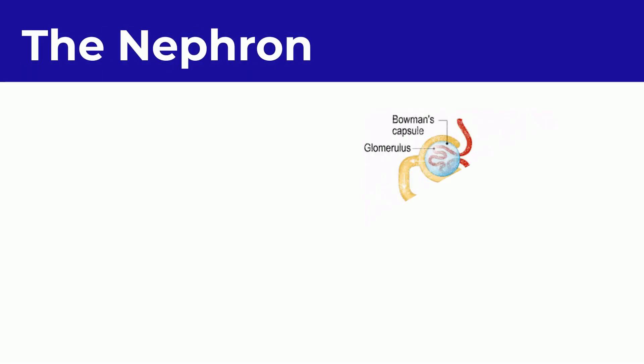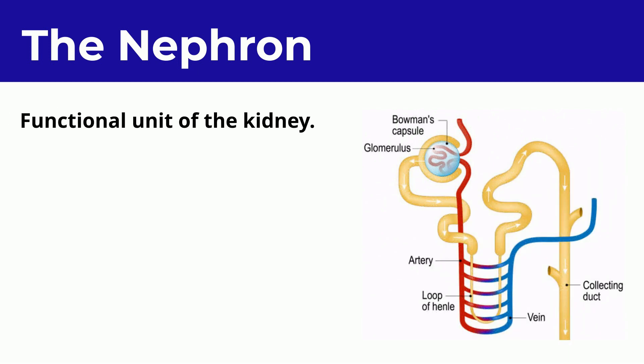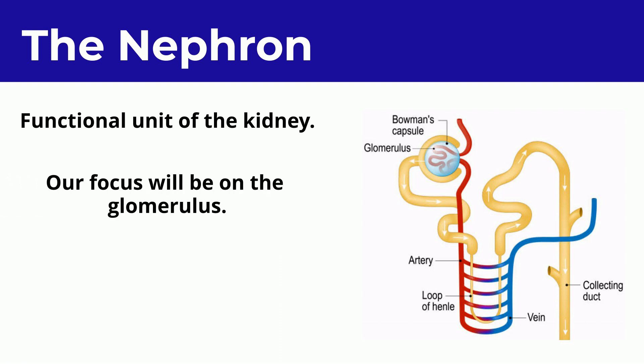The kidney contains millions of these tiny structures. What are these structures? This is the nephron, and the nephron is a functional unit of the kidney, where the kidney performs its function of blood filtration. The focus of this video will be on one specific part of the nephron, the glomerulus.